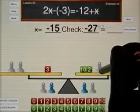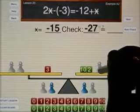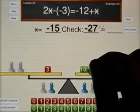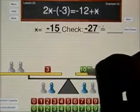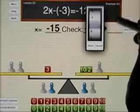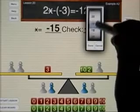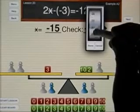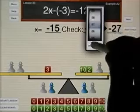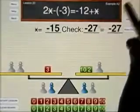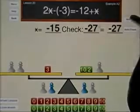And if x is negative 15, negative 15 and negative 12 is negative 27. So now you're ready to try the next example on your own.